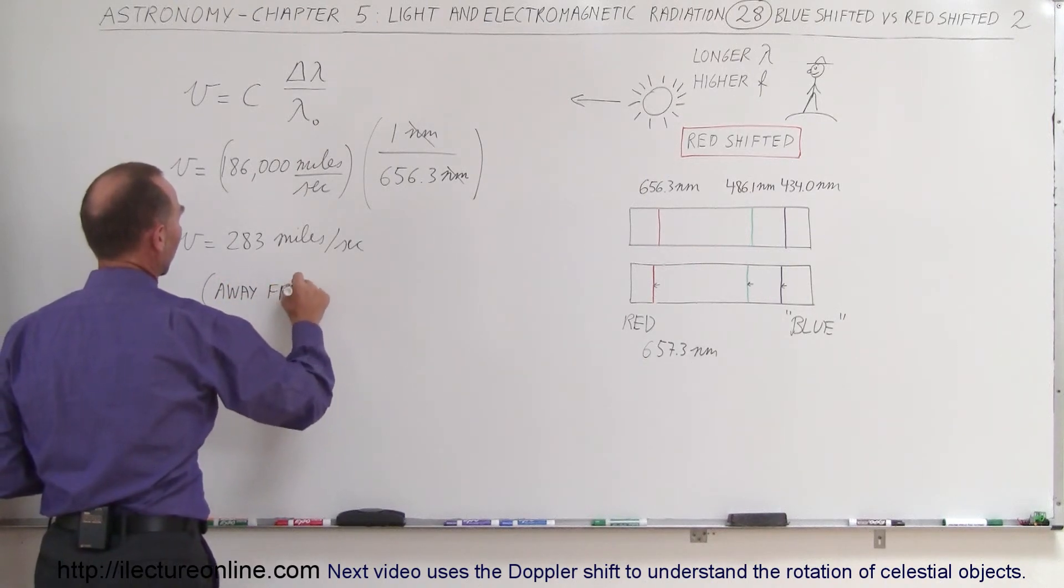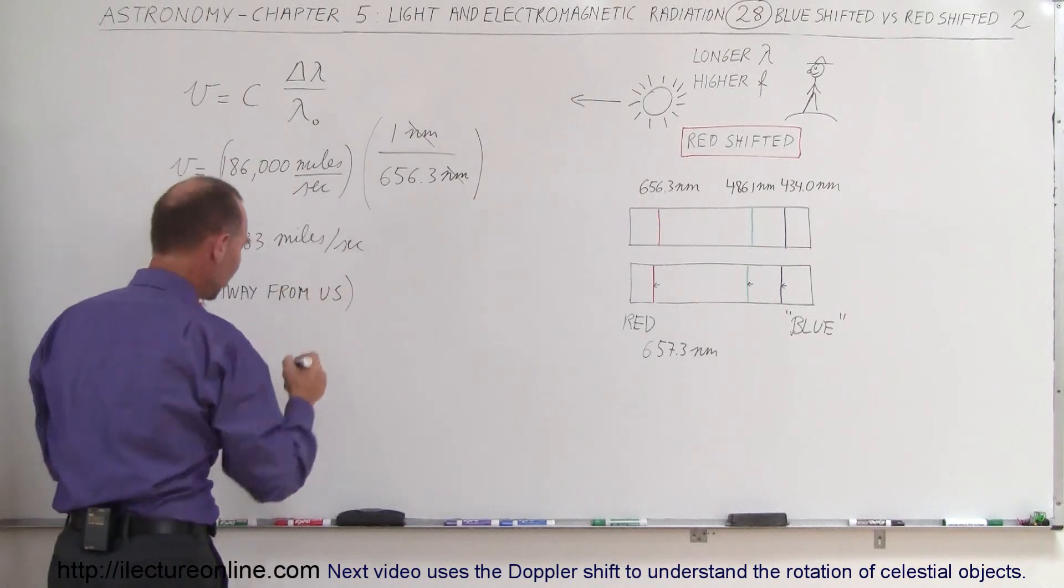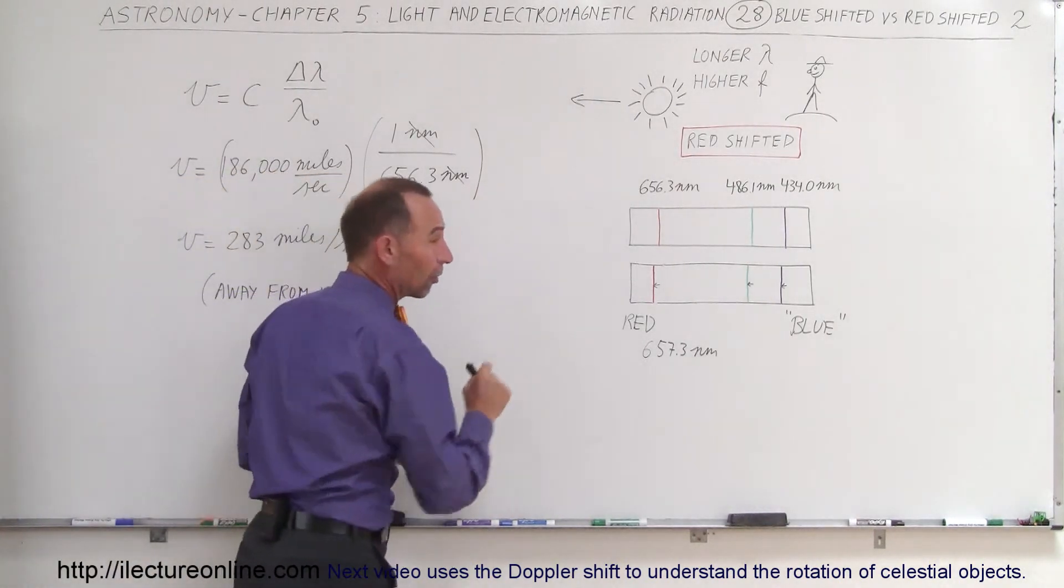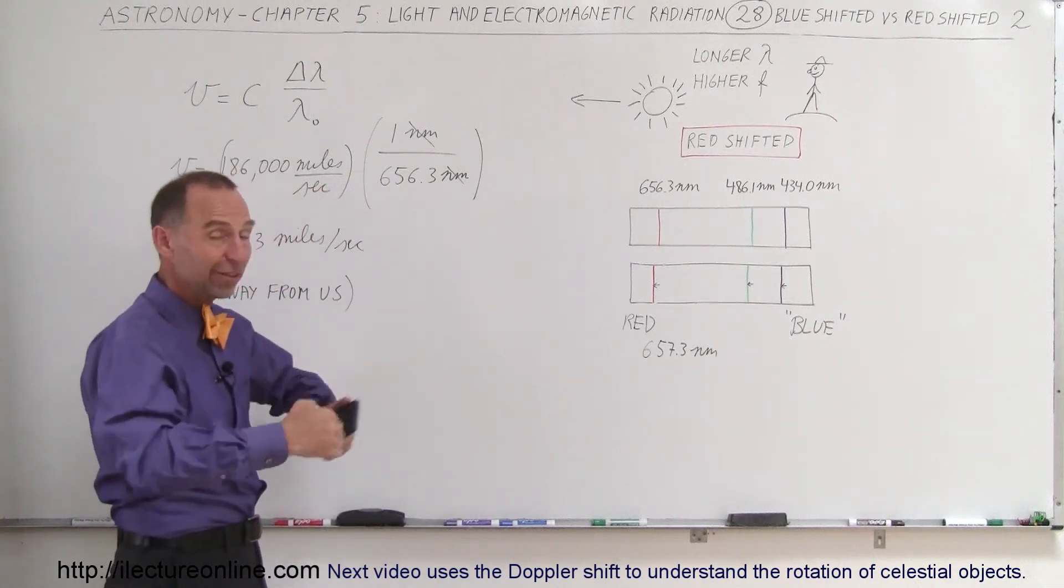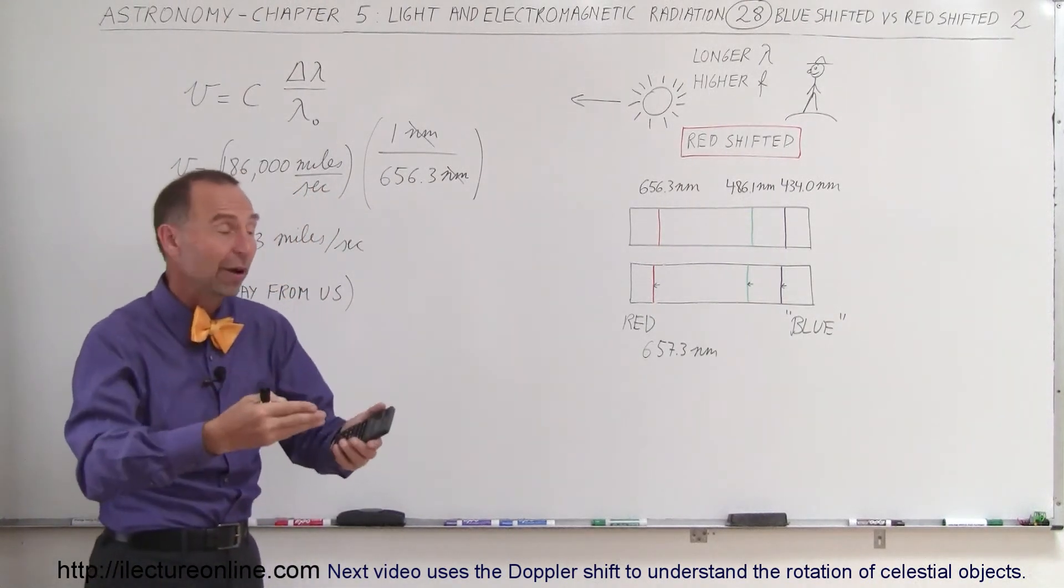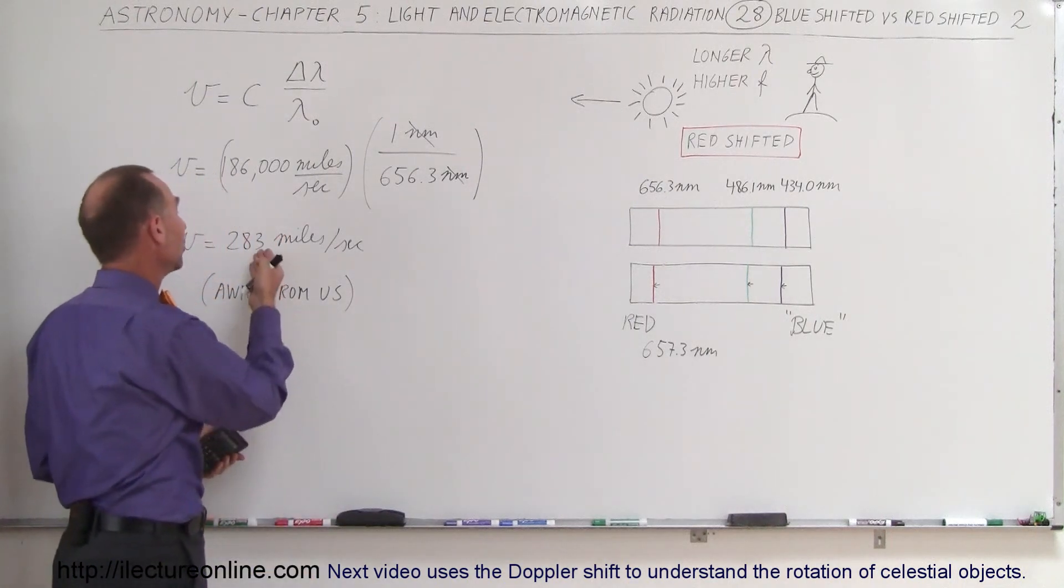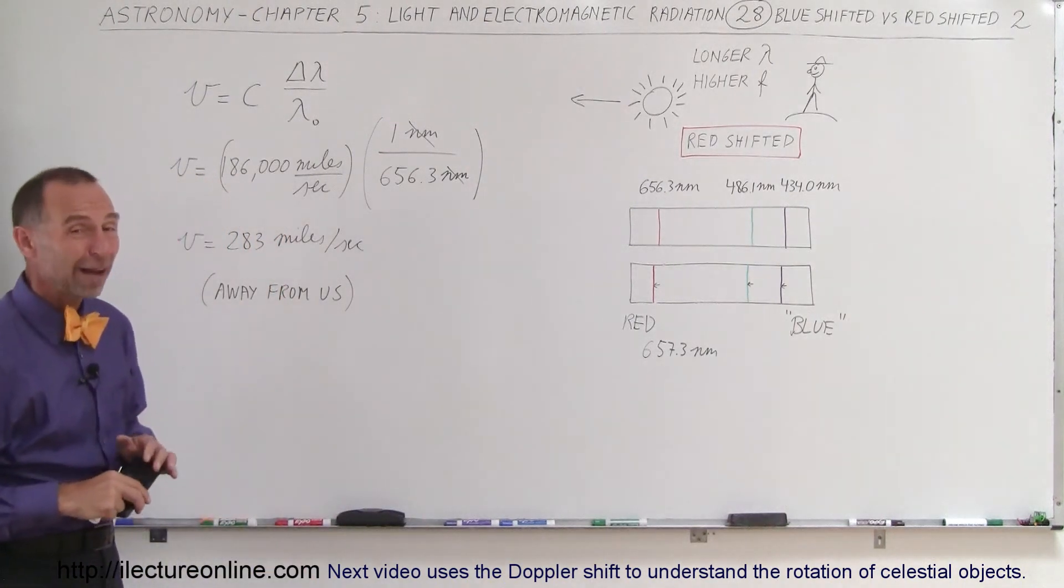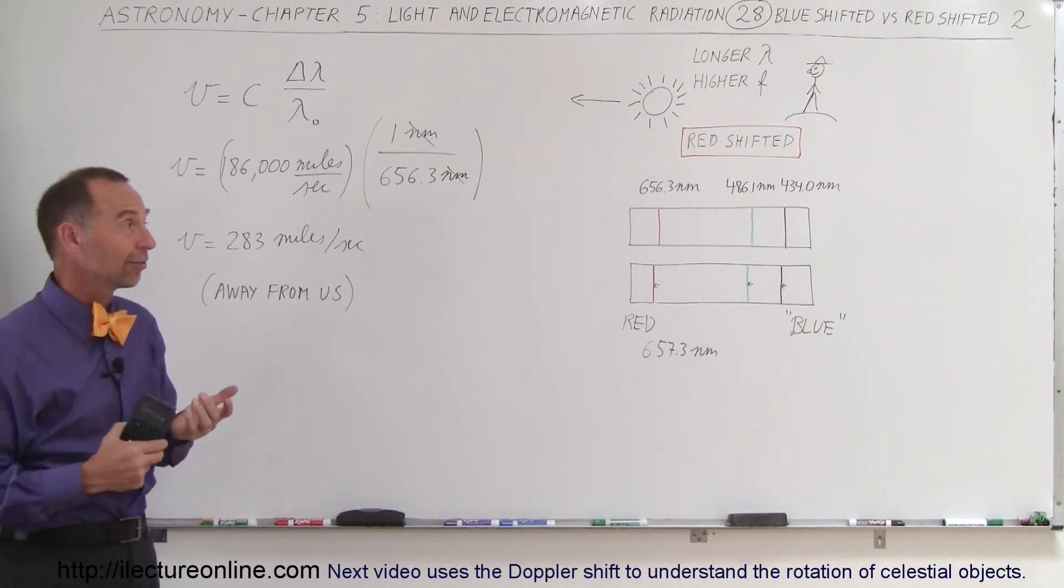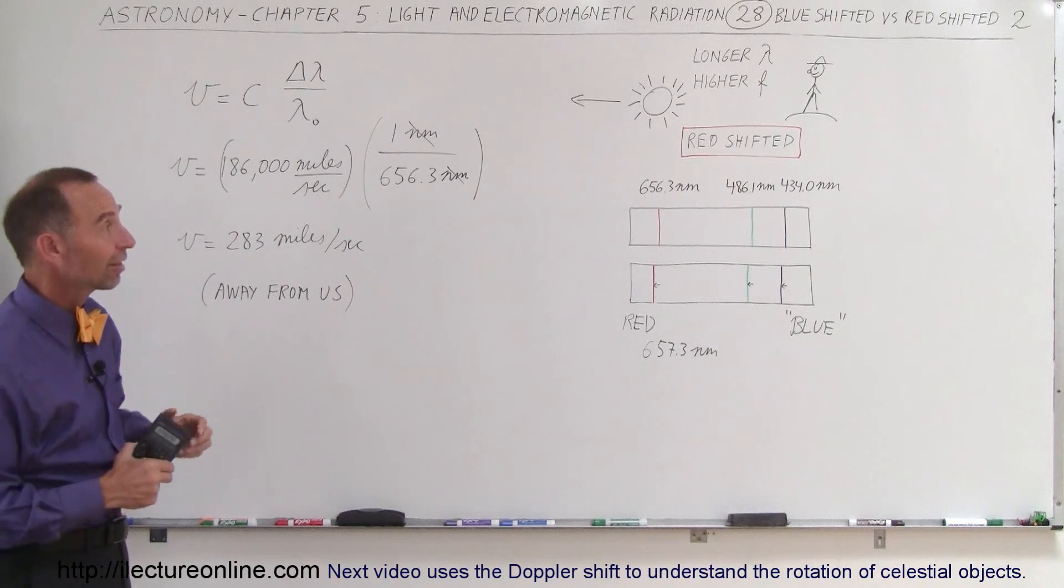The velocity is equal to 283 miles per second, and away from us. How do we know that it's away from us? Well, first of all, the wavelength is longer. The Doppler shift: long wavelengths mean moving away from us. We know that it's red shifted. Red shifted means moving away from us. In this case, we notice that it's 283 miles per second. That's moving quite fast—imagine 283 miles per second. That's very fast, moving away from us at that speed.